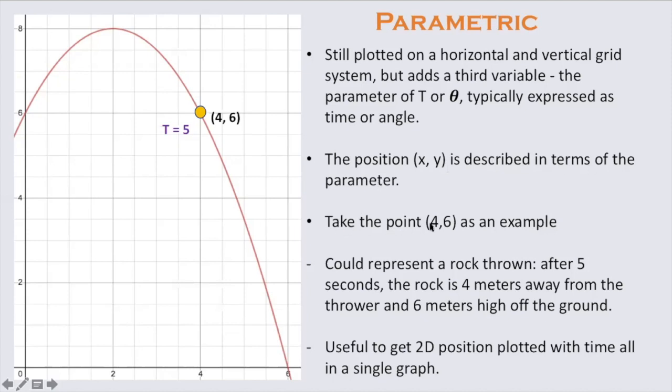The position xy is described in terms of the parameter. So let's take a look at this point 4 comma 6 again. This means that you have four units of horizontal distance and six units of vertical distance, but it's in terms of this t equals 5 parameter, which would be time. So the rock was thrown, the rock goes 1 Mississippi, 2 Mississippi, 3 Mississippi, at 5 seconds.